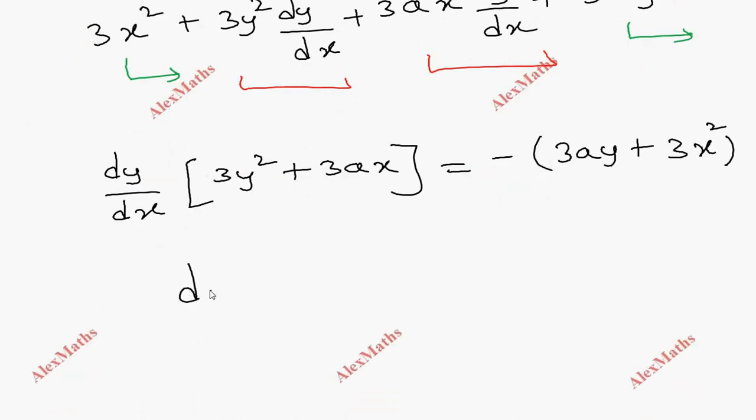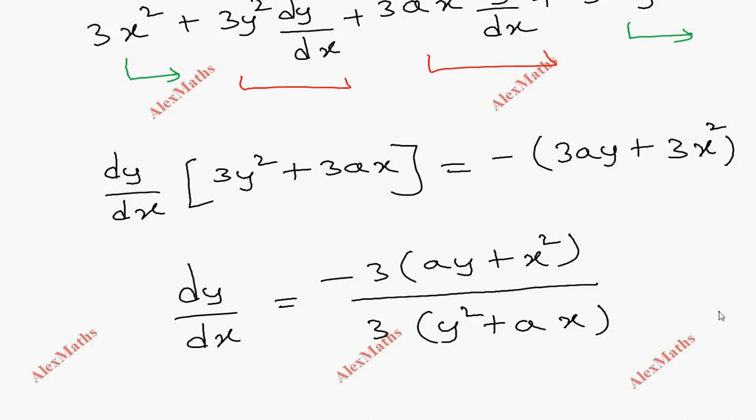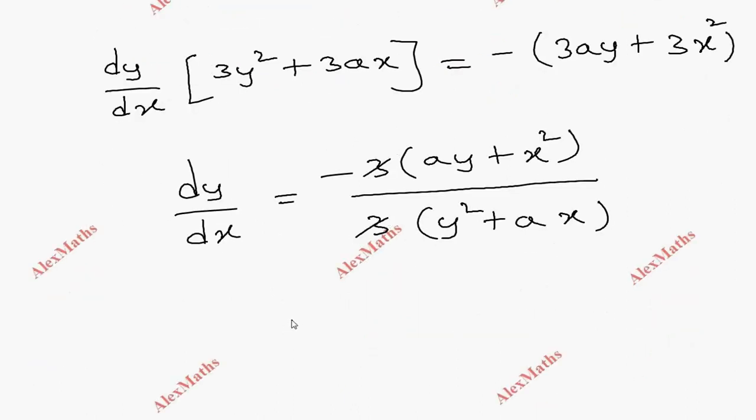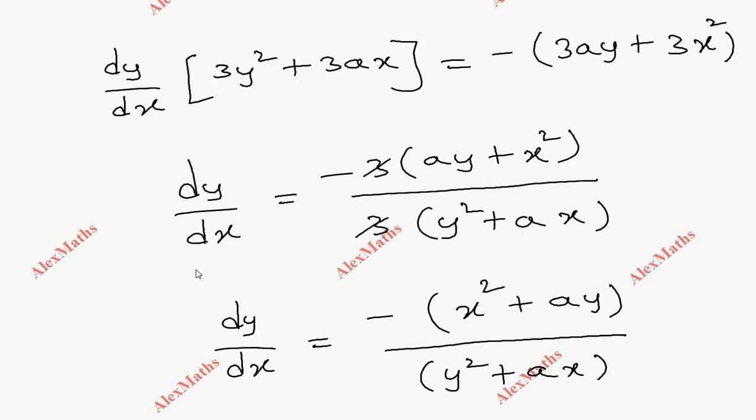So dy/dx bracket open 3y squared plus 3ax equal to, the two terms other side minus. If you multiply these, 3y squared plus ax. dy/dx equal to minus 3x squared plus 3ay whole divided by 3y squared plus 3ax. So dy/dx is complete.